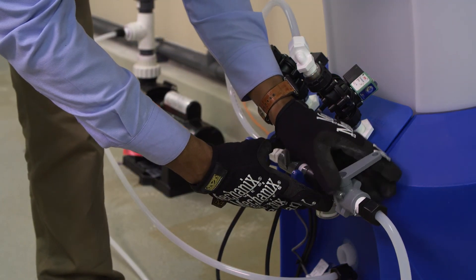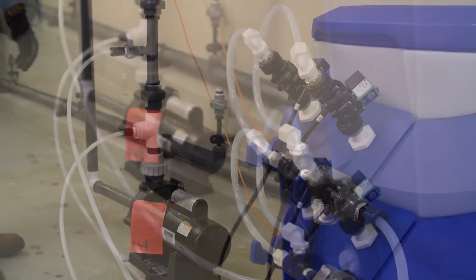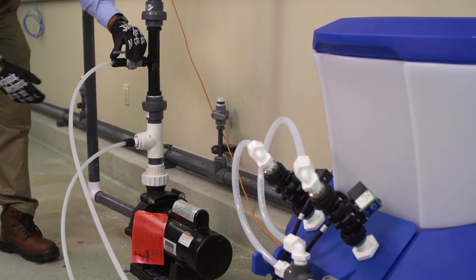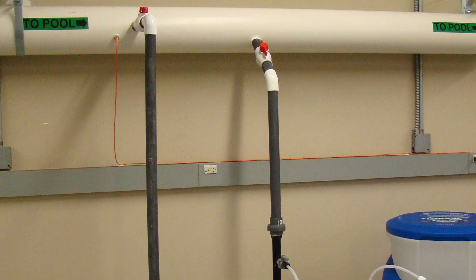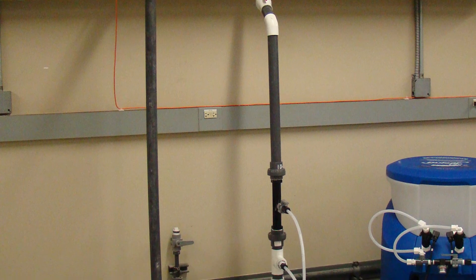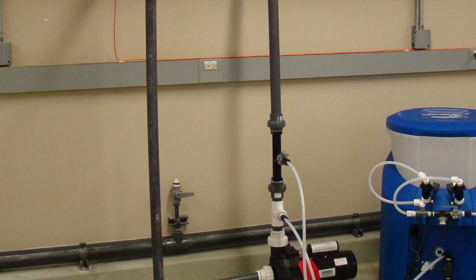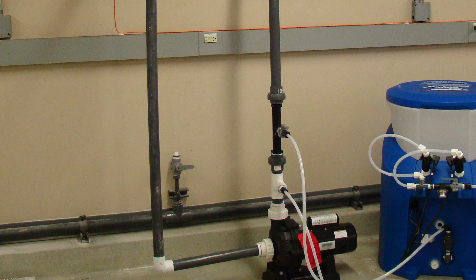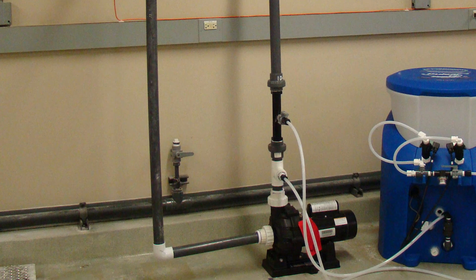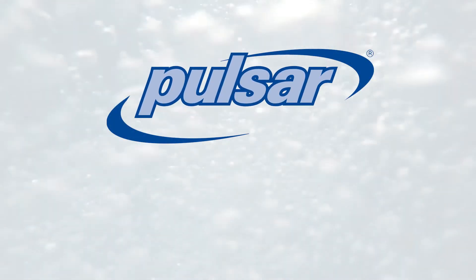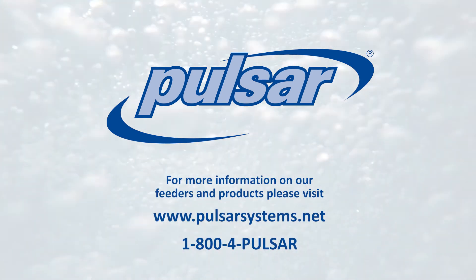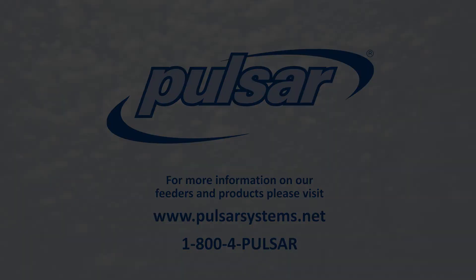Start and run the pump for 3-4 minutes, then open the 1.5-inch ball valves and allow water to flow into the feeder, checking for leaks. You have now completed a full Pulsar system install. Refer to the operating manual for operating instructions.